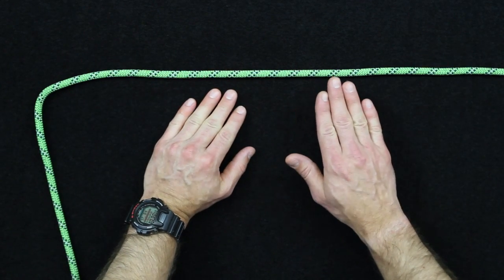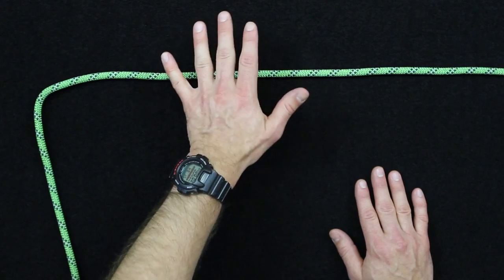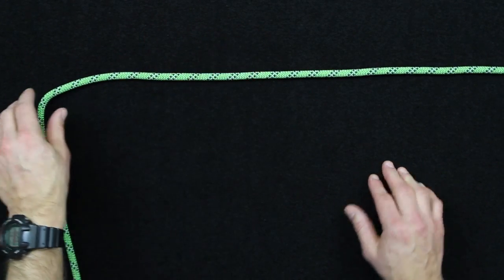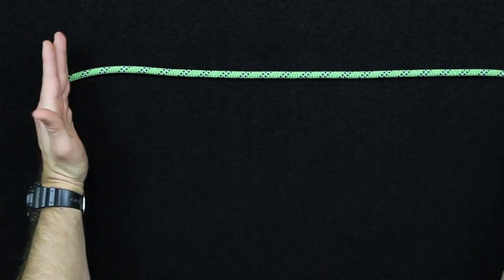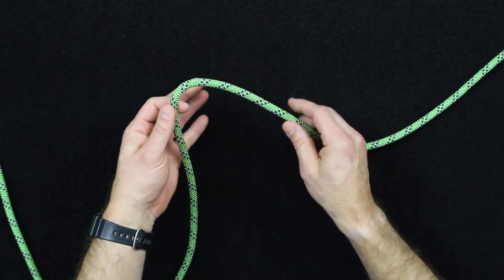So this is just an alternative to that. It's not as heavy as a monkey's fist, so that's a caveat to the heaving line knot. But first off to tie this, you're going to take around a two foot section of line, and it just really depends on the thickness of the line, the length that you're going to need.